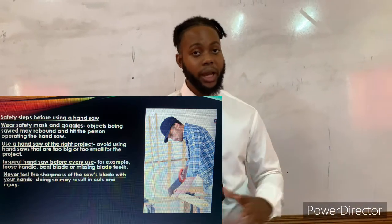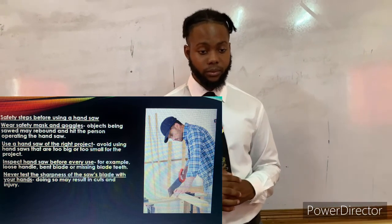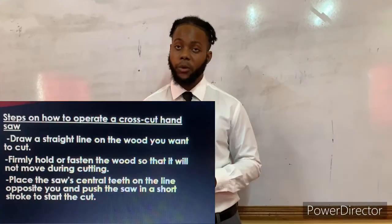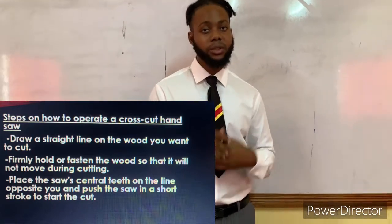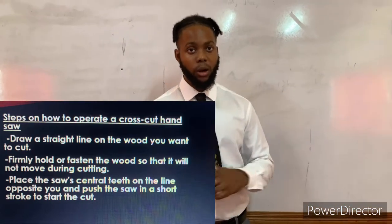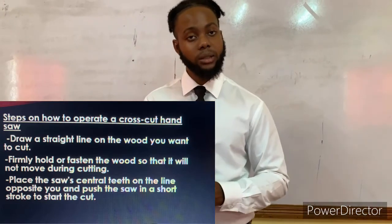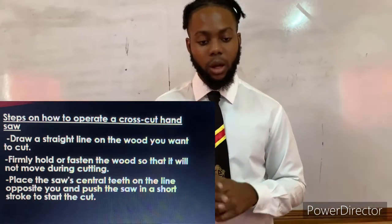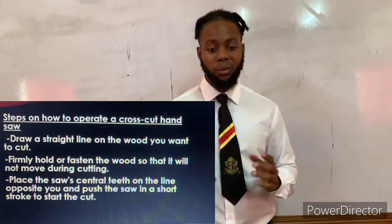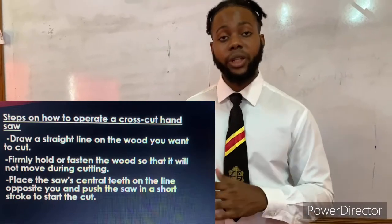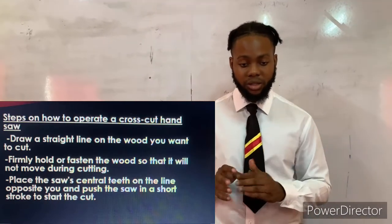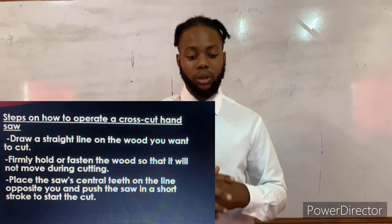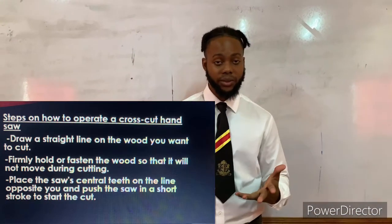Whenever we want to test if the blade is sharp, we use a piece of wood — not our hands — because using your hand you can get injured and may lose a finger. Now here are the steps on how to operate the hand saw. I will present a video of someone operating a cross-cut saw, and from that video I derived these steps: draw a line on the wood you want to cut, firmly hold or fasten the wood so it will not move during cutting, place the saw's central teeth on the line opposite you, and push the saw in a short stroke to start the cut.